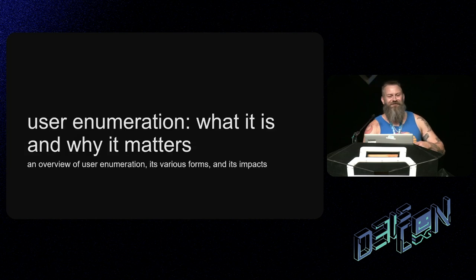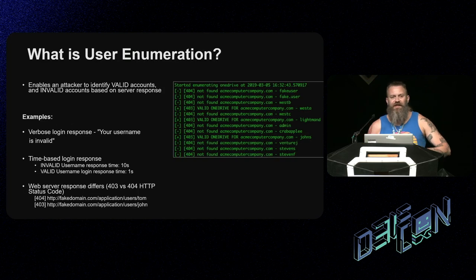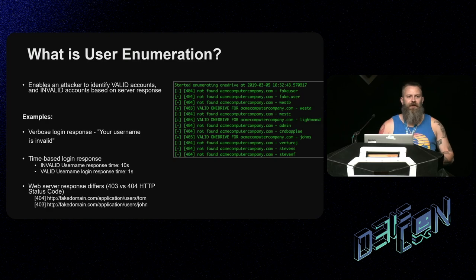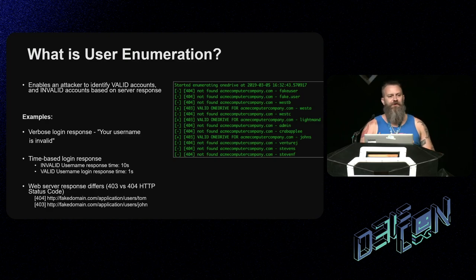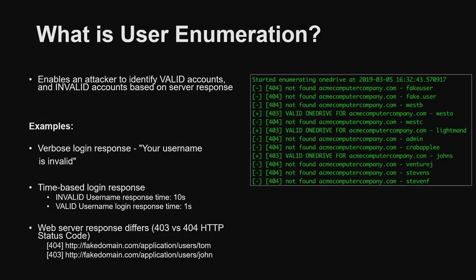Let's talk about user enumeration and why it matters. User enumeration is the ability to determine if a user is valid on a system. There are various ways of doing it, especially in Azure. Some examples: verbose responses saying if the username is invalid or not, time-based ones, or web-based ones — maybe a 404 if the user doesn't exist, or a 302 or 401 if they do.